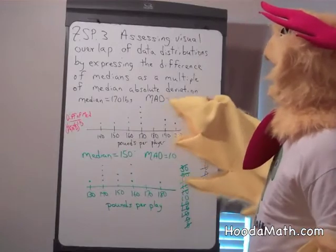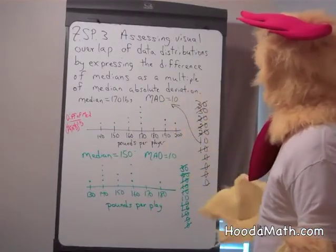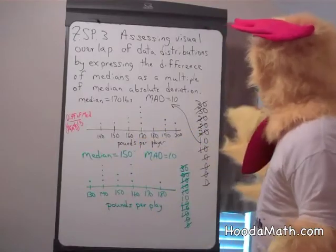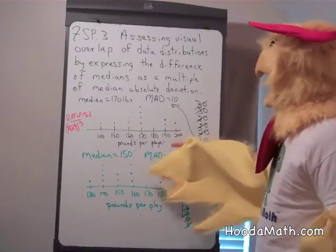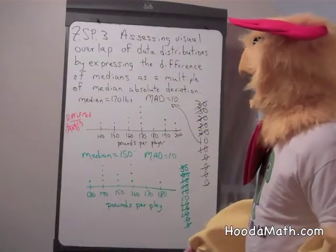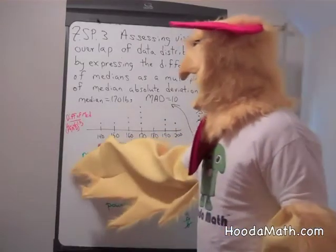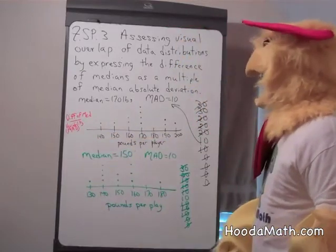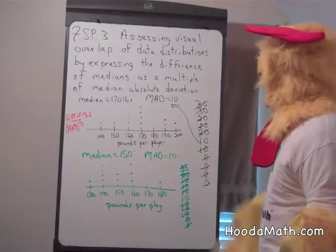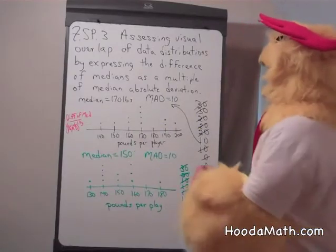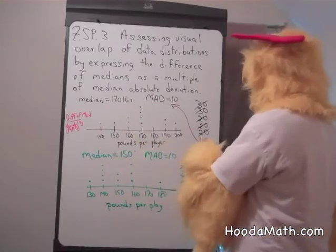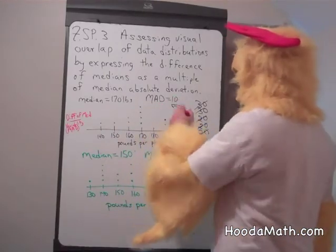And then we look at the median absolute deviation, or what is the deviation from the median? And I put them in order from the biggest differences, 30 pounds. 200 is 30 pounds bigger than 170, and 140 is also 30 pounds different than 170 pounds. Put these in order, and then found that the median absolute deviation, or the median of the differences is 10 pounds.